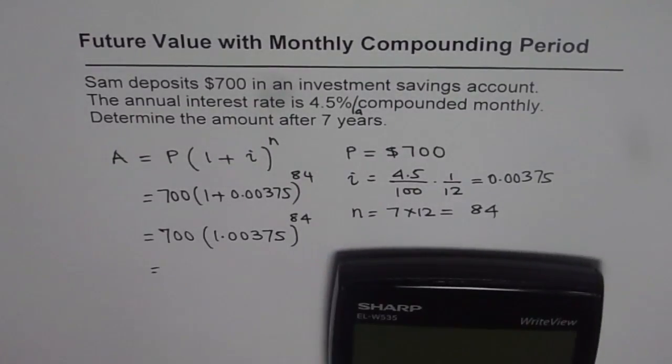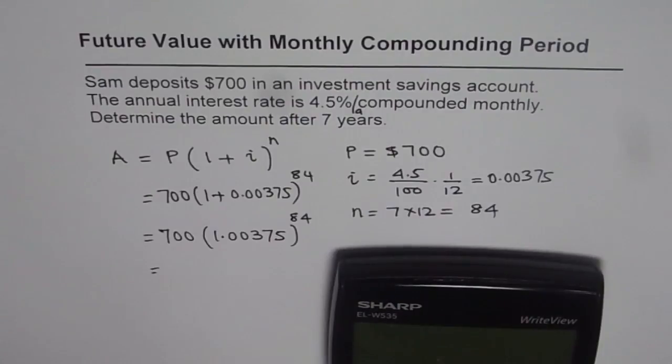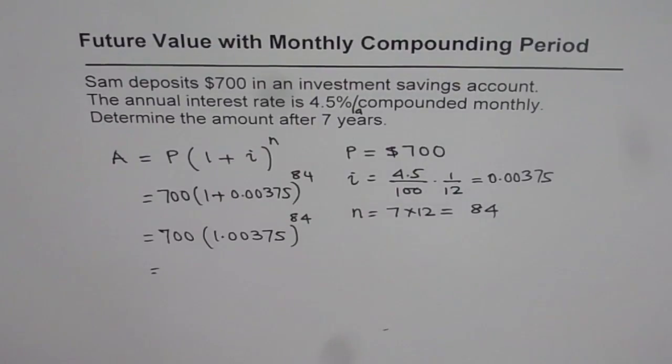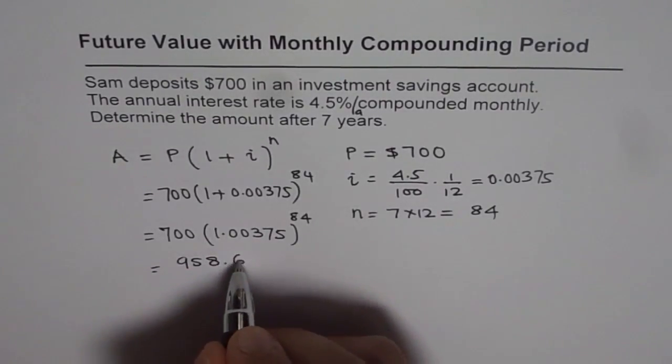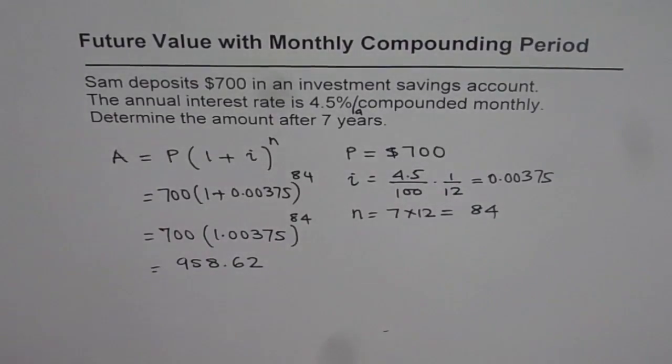So let us calculate the answer. 700 into 1.00375 to the power of 84. It is equal to 958.616. So I will round it to 62. So that is the value.